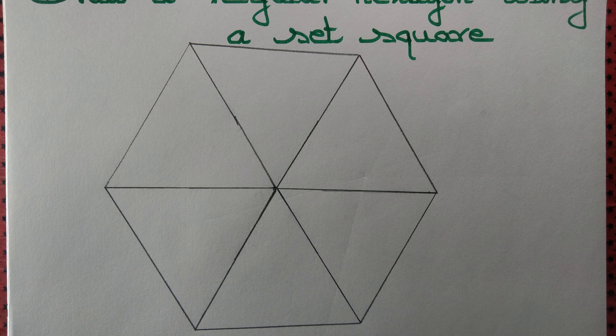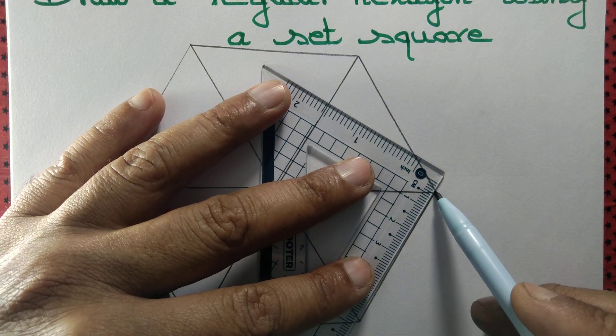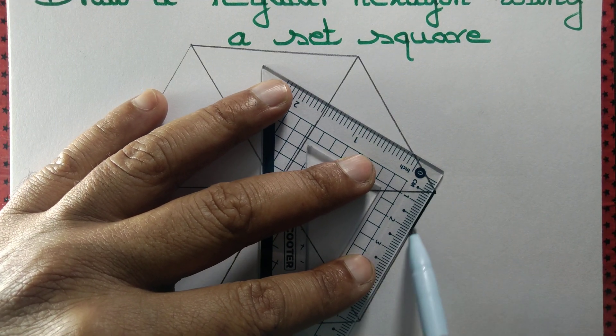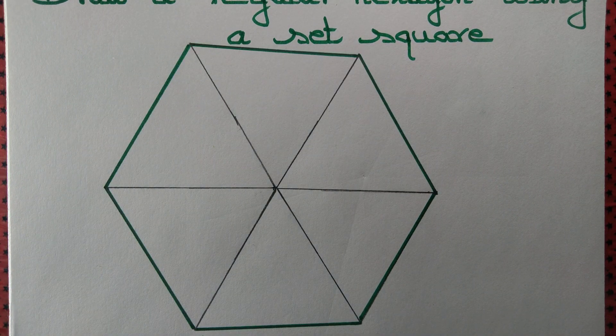Let us draw the sides using a green pen. Let us label the hexagon.